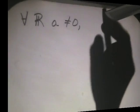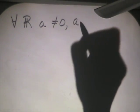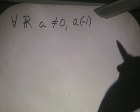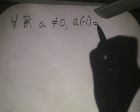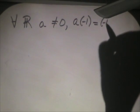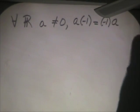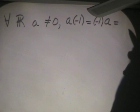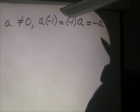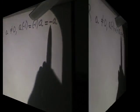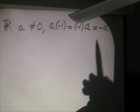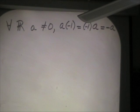If we take A and multiply it times negative 1, that is the same as taking negative 1 times A, and it's going to be equal to the opposite of A. Now notice I didn't say the negative of A, because if A itself happens to be a negative number, the opposite of A would be a positive.